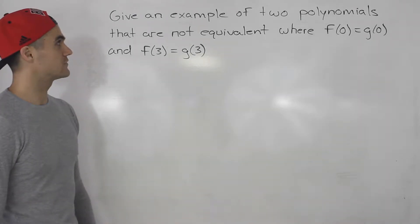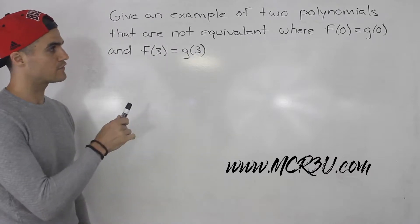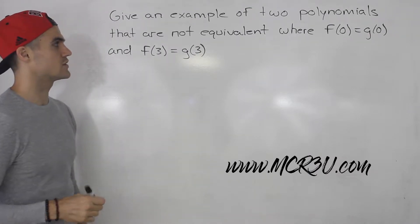What's up everybody? In this question we have to give an example of two polynomials that are not equivalent where f of 0 is equal to g of 0 and f of 3 is equal to g of 3.